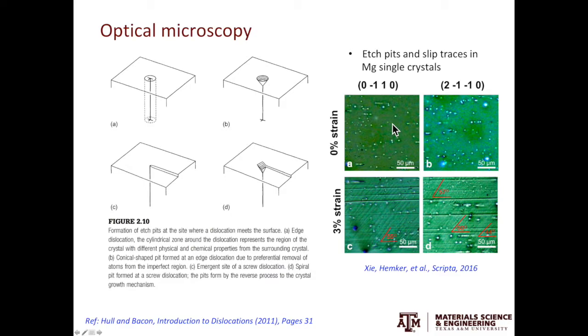Back to the example on the right, the top two images are the crystals before deformation. The bottom two images are after deformation. In the bottom two images, you see these inclined lines, those are called slip traces, which tells you the dislocation activities in the material.